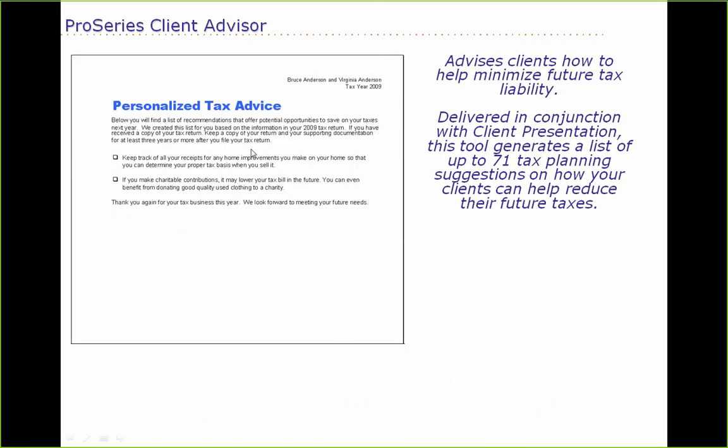The final report is called Personalized Tax Advice — my favorite of the three. It offers planning suggestions, looking at about 70 different things. For example, it might say you could have contributed up to $5,000 to an IRA and saved $1,500, or mention self-employed retirement plans. It gives your client advice on things they can consider. Most good preparers already do this, but the report lets you easily include it in the printed return.